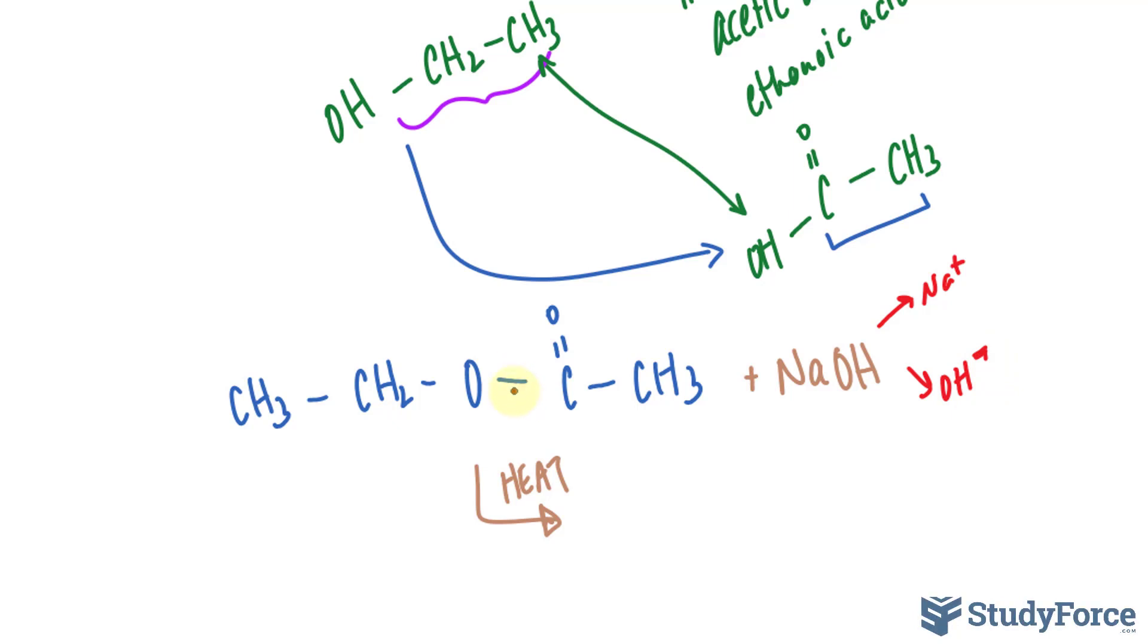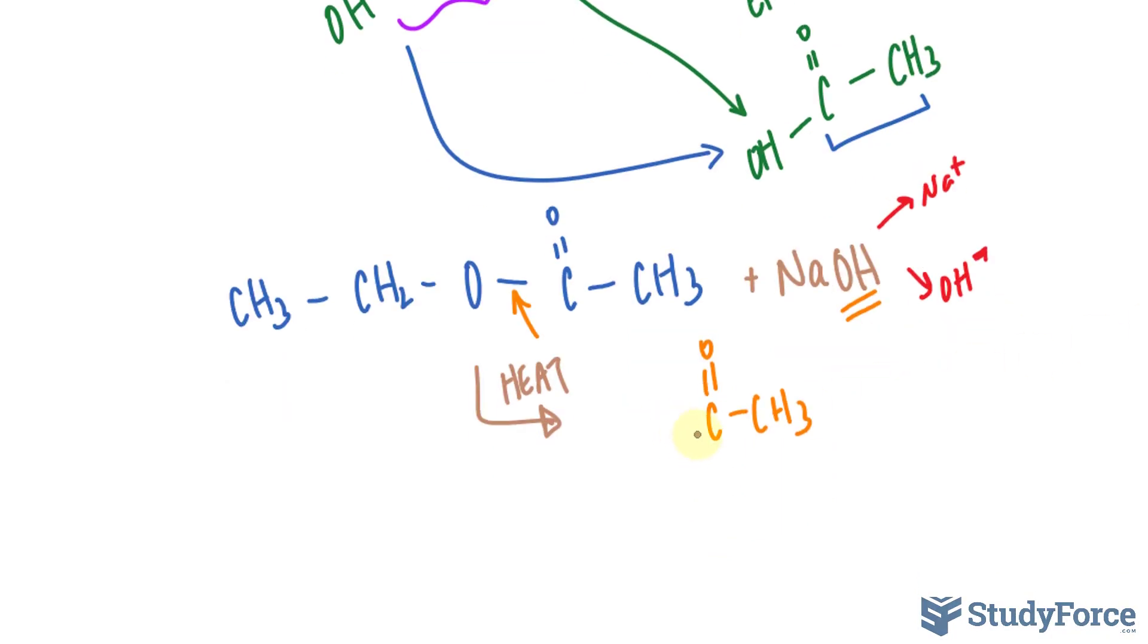the ester bond breaks right here, and you form temporarily a carbonyl with CH3. So let me show you that. So you have a carbonyl with CH3. The OH will then form a bond with this carbon, and you form this carboxylic acid, which quickly dissociates where this hydrogen breaks off, making this oxygen temporarily negative, and it forms the bond with Na+.